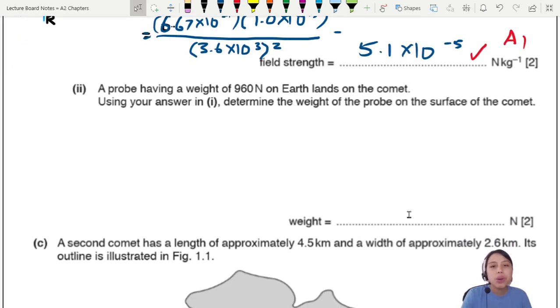Part 2: A probe has a weight of 960 N on Earth and lands on the comet. Use your answer to determine the weight of the probe on the surface of the comet. How do we know that?